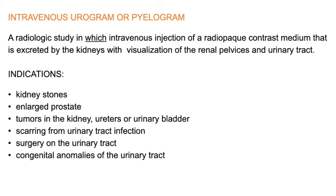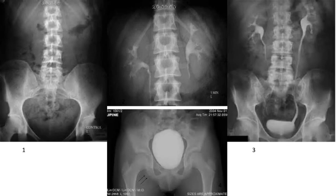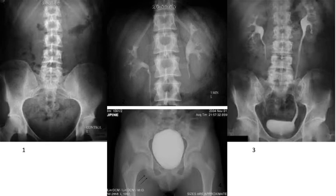These are the indications you need to know very well. Here is an example of the IVU. In image number one it looks like a KUB X-ray. In image two, five minutes after injection of contrast, you can see the calyces and pelvis filling with contrast and the superior part of the ureters. In image three, about 15 minutes after injection, you can see the whole urinary system.